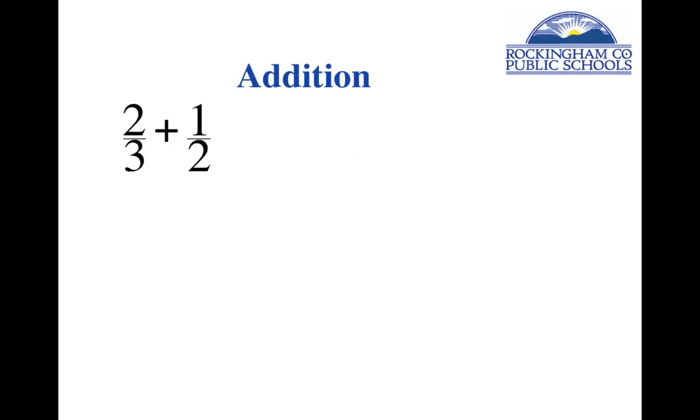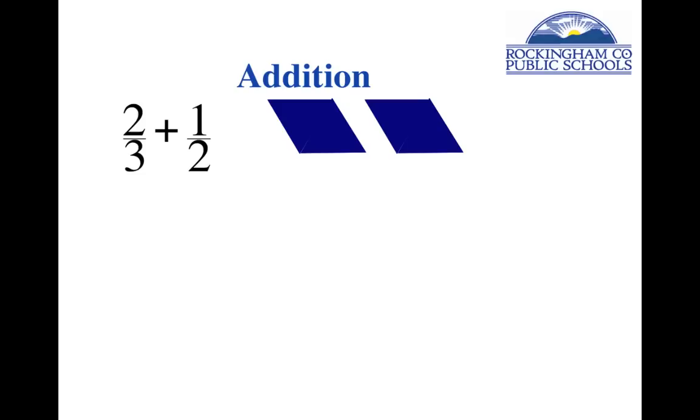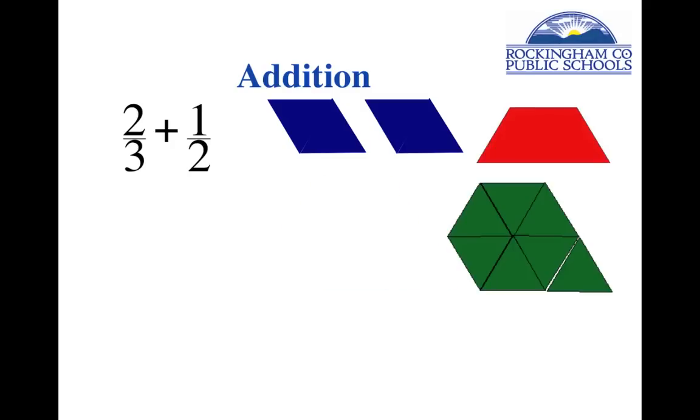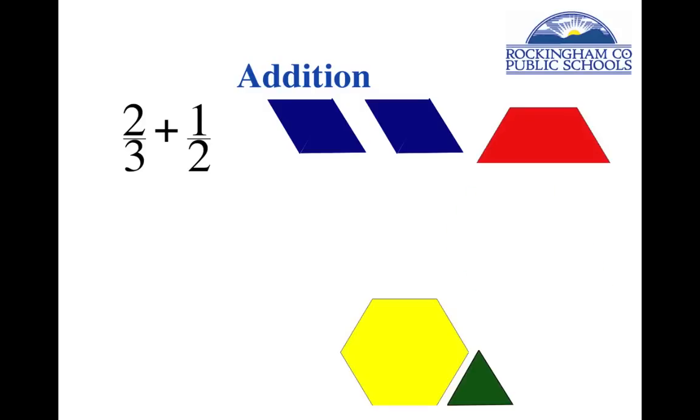Let's do another one. Two thirds plus a half. Would you do that with your pattern blocks, please? And I'm going to wait just a few minutes and give you a chance to do that and see what answer you get when you add two thirds plus a half. There's two thirds. Add to it a half. Now put your pieces together and see what you can make. I think you can see that what we could get out of this would be one and a sixth. So two thirds plus a half must be one and a sixth.